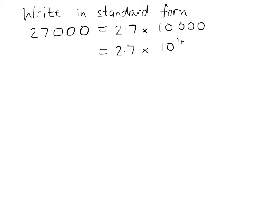You can spot that it is 10 to the power 4 by looking at the original number and seeing how it moves in relation to the decimal point. There are 1, 2, 3, 4 jumps, giving 10 to the power of 4.